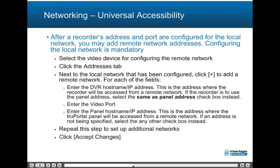After a recorder's address and port are configured for the local network, you may add remote network addresses — configuring the local network is mandatory. Select the video device, click the Addresses tab, then click plus to add a remote network. For each field, enter the DVR hostname/IP address where the recorder will be accessed from a remote network; if the recorder is to use the panel address, select the 'Same as panel address' checkbox instead. Enter the video port and the panel hostname/IP address where the TruePortal panel will be accessed from a remote network. If an address is not being specified, select the 'Any Other' checkbox instead. Repeat this step for additional networks, then click Accept Changes.